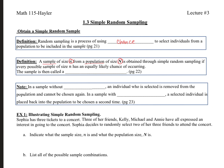Alright, so let me read this definition again. A sample of size n from a population of size N is obtained through simple random sampling if every possible sample of size n has an equally likely chance of occurring. So that's a big point. They need to have an equally likely chance of occurring. The sample is then called a simple random sample.